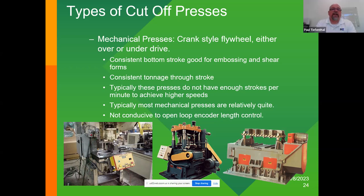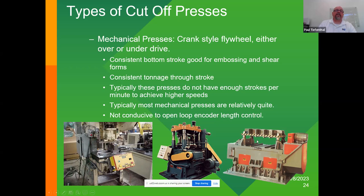We'll talk about types of presses used for cutoff. First, mechanical presses — usually a crank style with a flywheel, where the crank can be over or under. An OBI has the flywheel and crank above; under-drive presses have the crank below. They provide consistent tonnage through the stroke. Presses today are a lot faster than they were 20 years ago, though high-speed presses aren't found in the used press market. They're relatively quiet. They're not conducive to an open-loop encoder system because a flywheel-driven mechanical press doesn't always stop at top dead center in the exact same position — position variation above or behind top center results in length variation in an open-loop system.